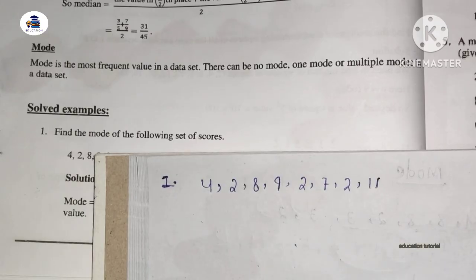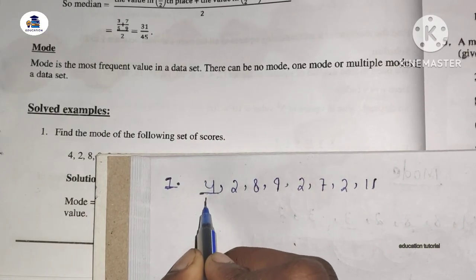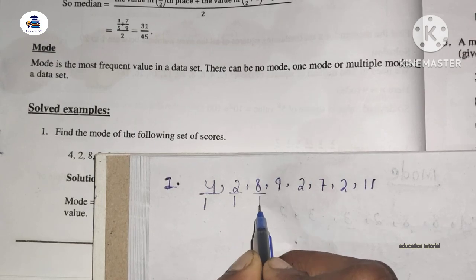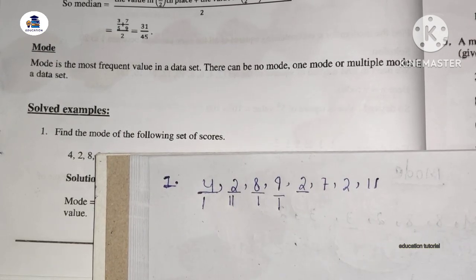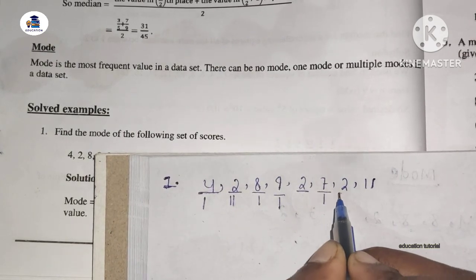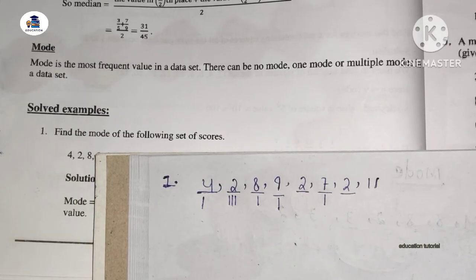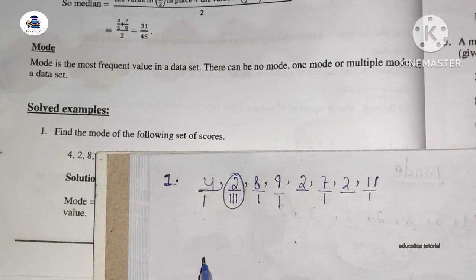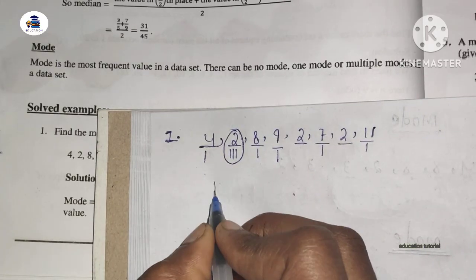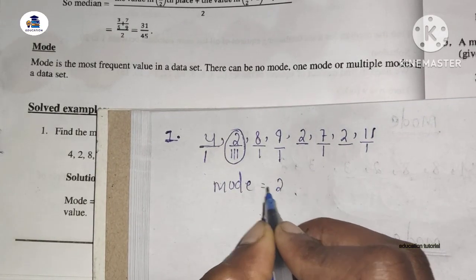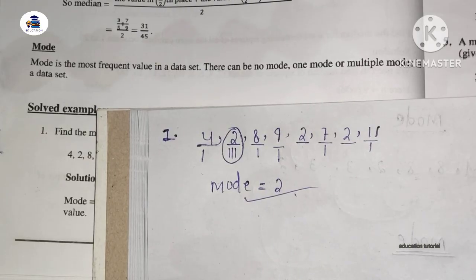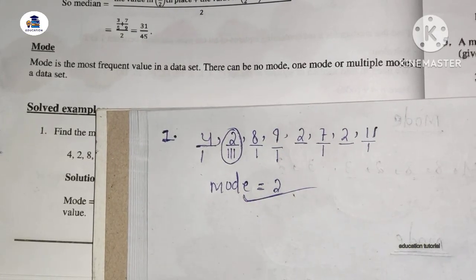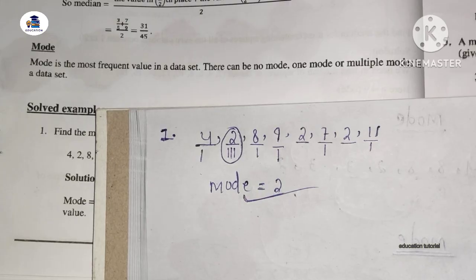The mode is shown in the dataset. The mode is 2, as 2 appears most frequently in the set.